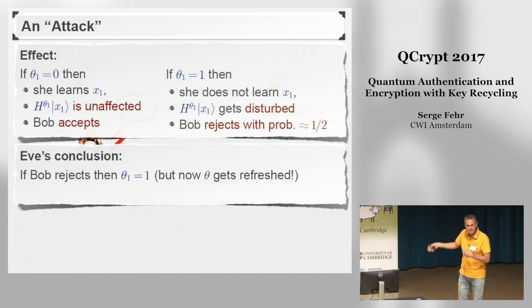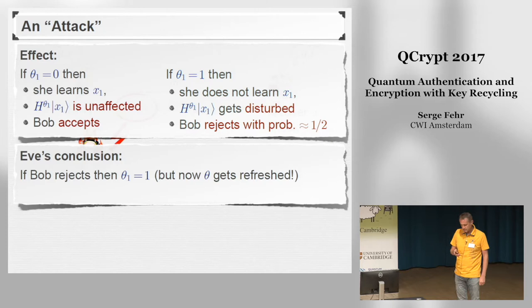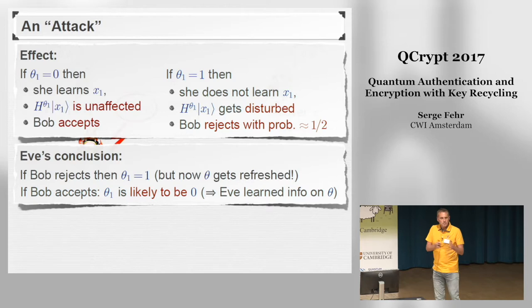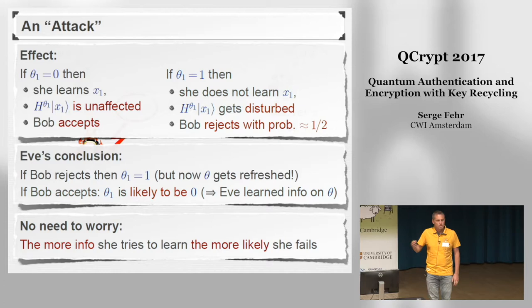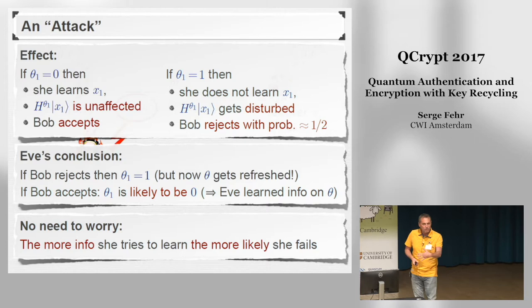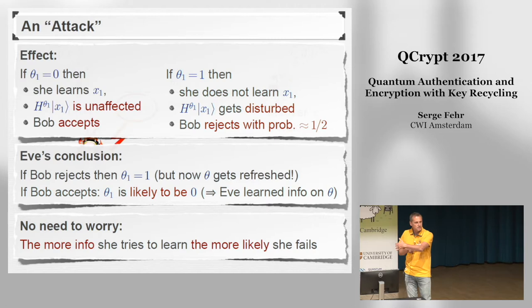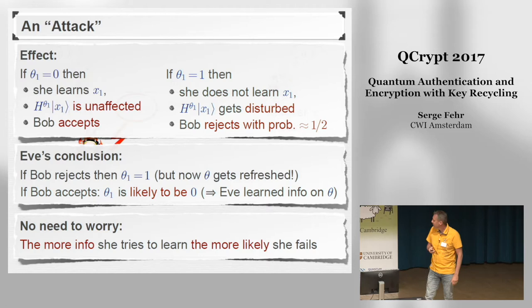We don't need to worry, because if Bob rejects, the scheme instructs them to refresh theta, so the bit of information Eve just learned becomes immediately useless. On the other hand, if Bob accepts, theta_1 may still be 0 or 1, but it seems more likely to be 0, so Eve has learned a fraction of a bit of information on the key. But we don't have to worry, because the more information Eve tries to gain by repeating this attack, eventually she's going to get caught — every time she launches this attack, Bob will reject with probability one-half, and as soon as Bob rejects, all the information Eve gained on theta becomes useless because theta is refreshed.